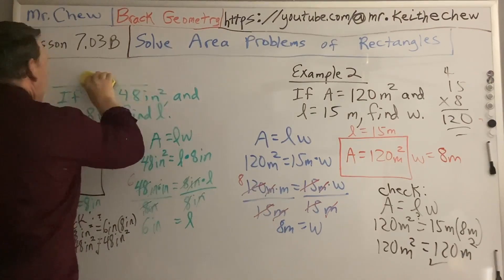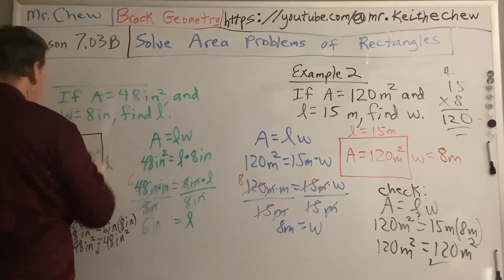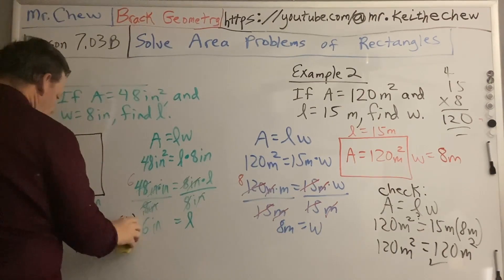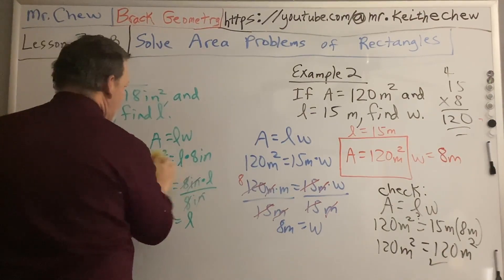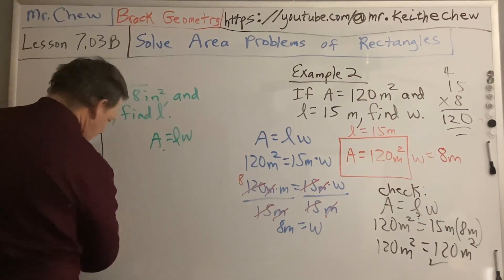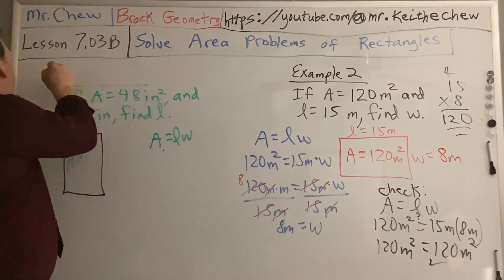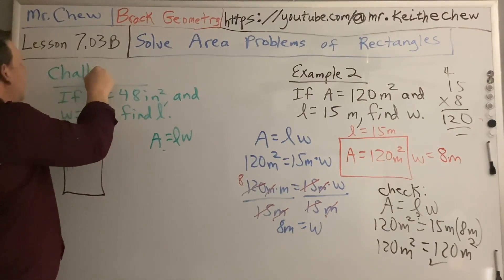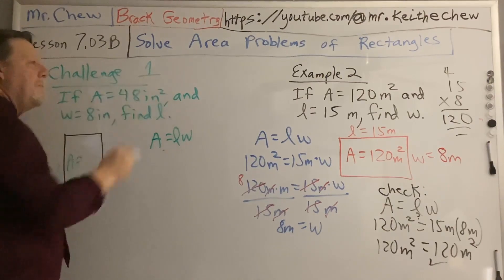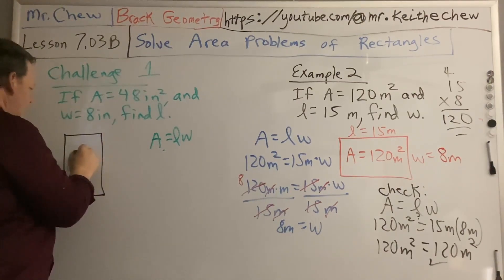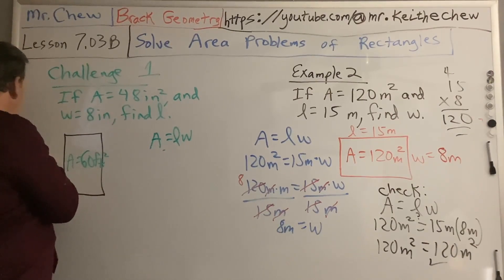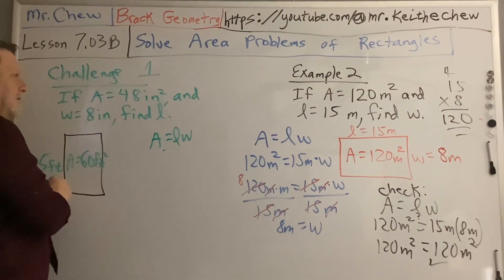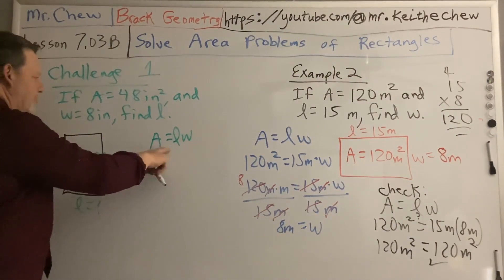This will be challenge problem one. And then we'll have a challenge problem two. So in challenge number one, it should be fairly simple now for you. The area is 60 feet squared. The width is 5 feet. Find the length.